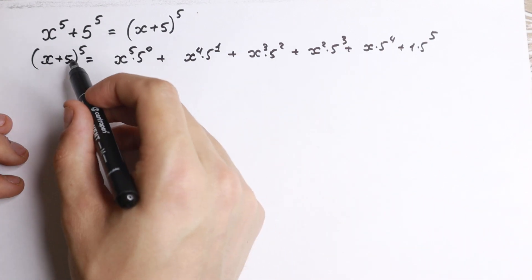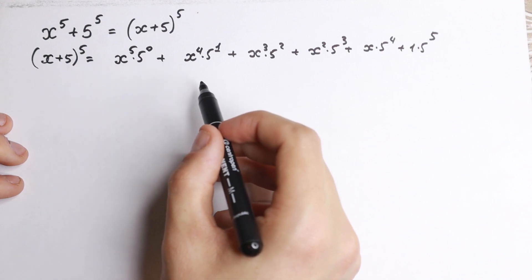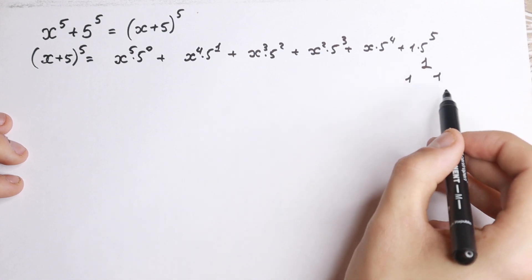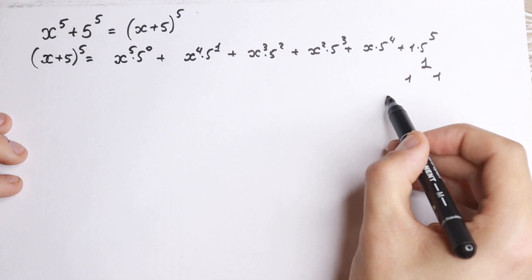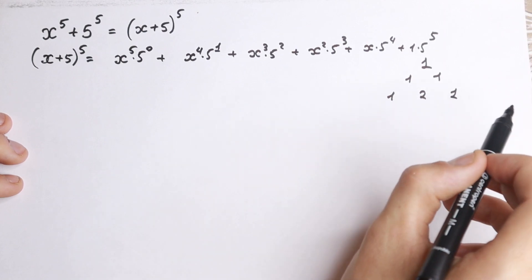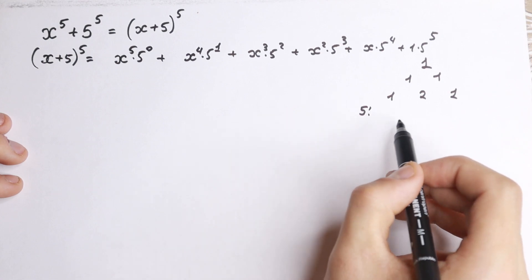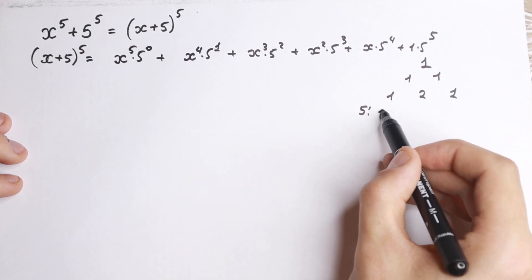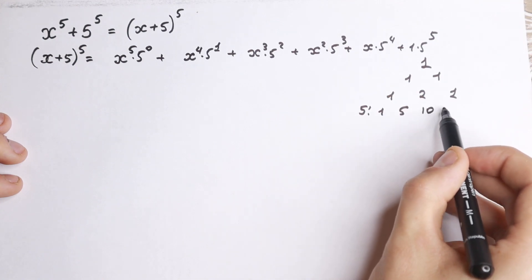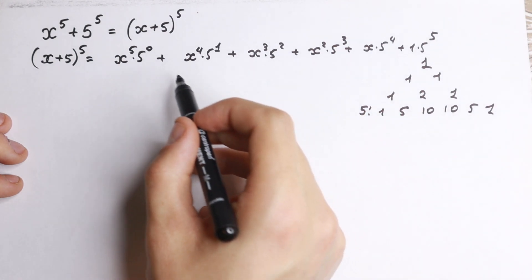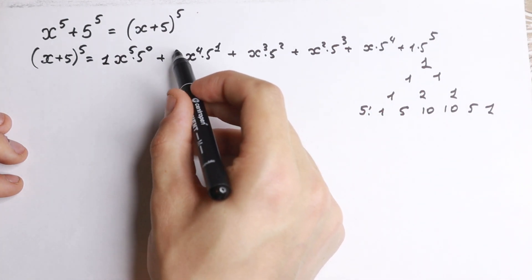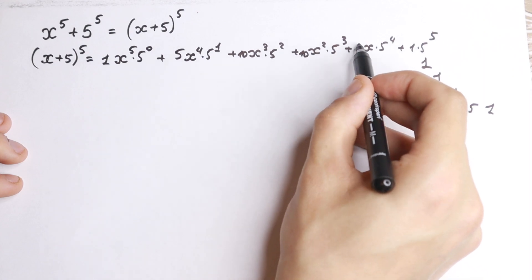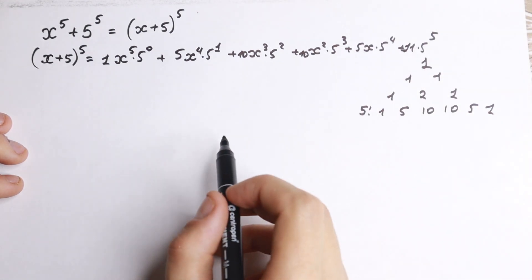But what about the coefficients? What about the fifth power? Everyone knows this triangle — for the first power we have 1; for the square we have 1 and 1, and we know the formula x squared plus 2xy plus b squared. But for the fifth power, skipping the fourth power and cube steps, the coefficients from Pascal's triangle are: 1, 5, 10, 10, 5, and 1. So let's write all of these numbers: here we have 1, here 5, here 10, here 10, here 5, and here 1.